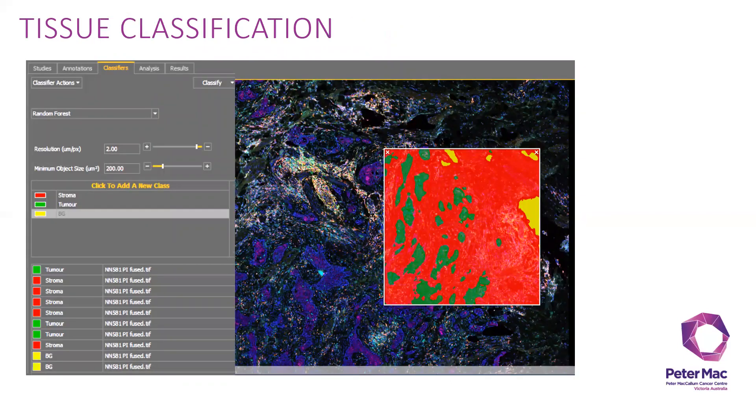Here, as you can see, I have made three different classes for the classification: stroma, tumor, and background. From that, I gave them a few different examples to teach the software on how to classify the different classes here. You can see it has done a pretty good job as shown in the left preview window.